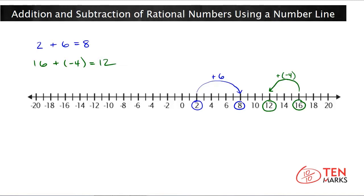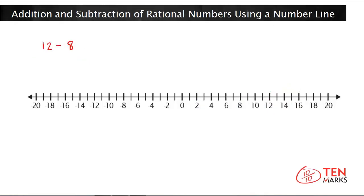Now let's talk about how to use the number line to subtract. Subtraction means to take away. If you want to subtract on the number line, you start at the first number and move left by the number you're subtracting. So if we want to subtract 12 minus 8, you start at 12 and jump to the left 8 places. The number you land on is the difference — so 12 minus 8 equals 4.